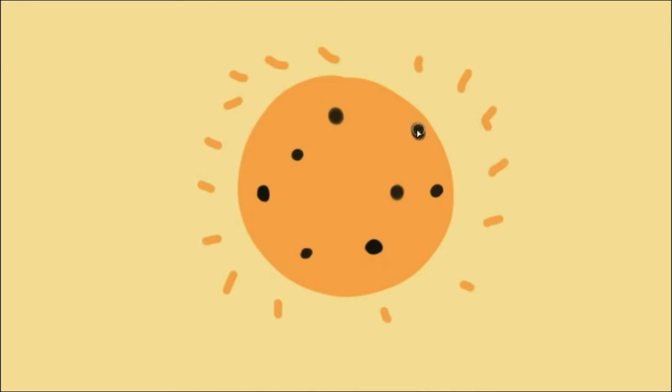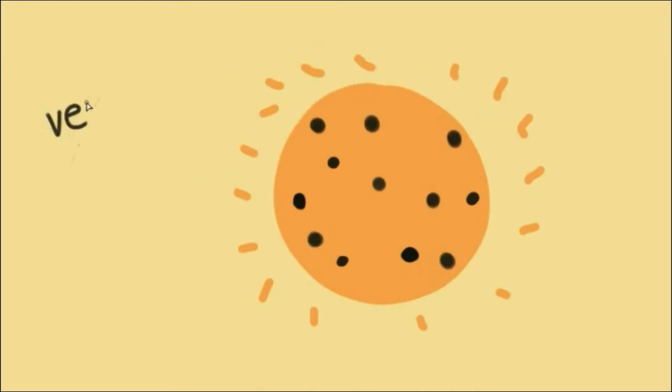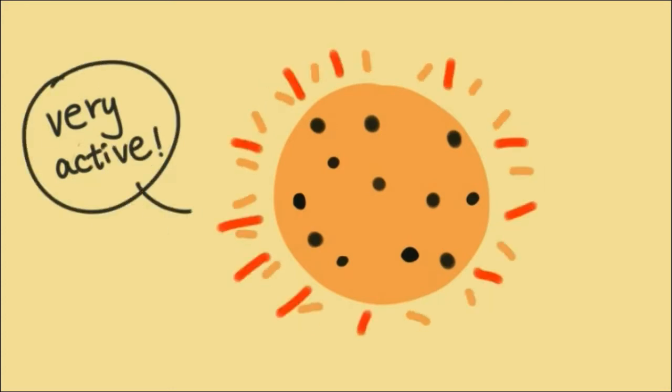But this number isn't constant. In fact, the number of sunspots change in a repeated cycle. An increase in the number of sunspots means an increase in the sun's activity. When I say activity, I mean solar flares and coronal mass ejections.